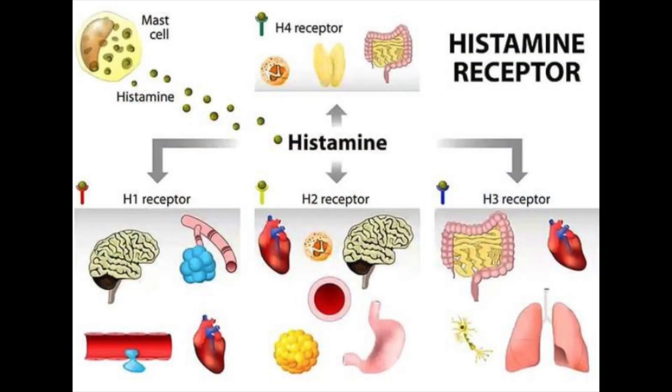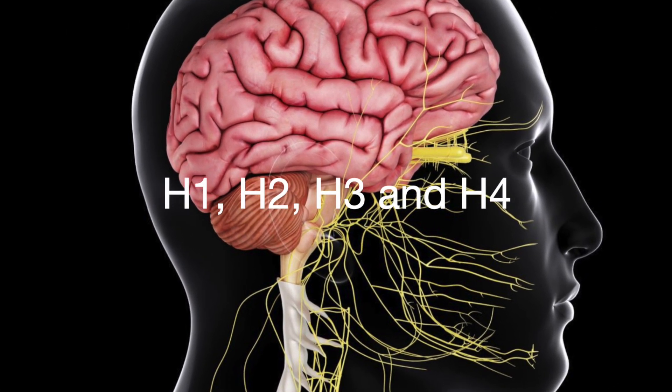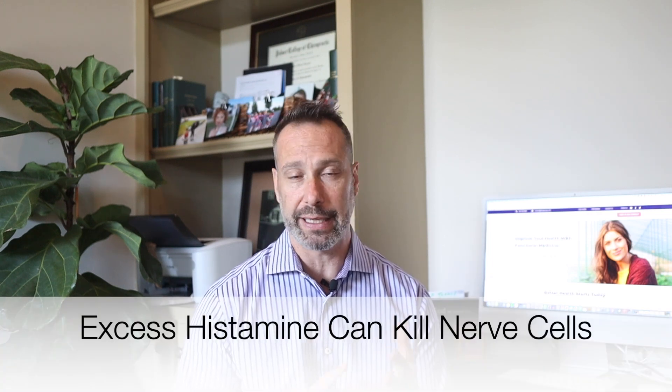When it comes to histamine, there are four known histamine receptors: H1, H2, H3, and H4. Different tissues have different histamine receptors, and depending on which receptor histamine binds to, it determines what happens in that particular tissue. The brain has all four histamine receptors, meaning histamine can have a wide-ranging effect depending on where it binds. Just as histamine can affect your skin causing hives and your eyes causing them to water, histamine in the brain can impact motivation, memory, mood, and even appetite.